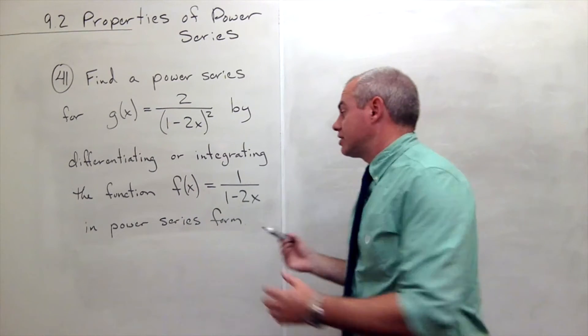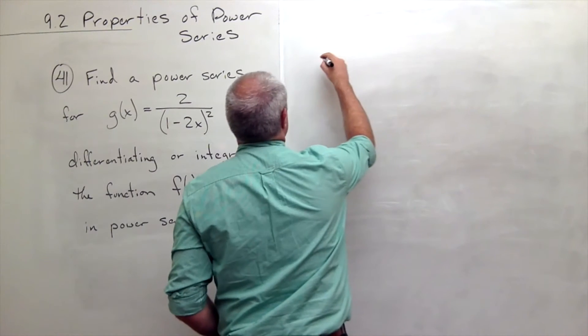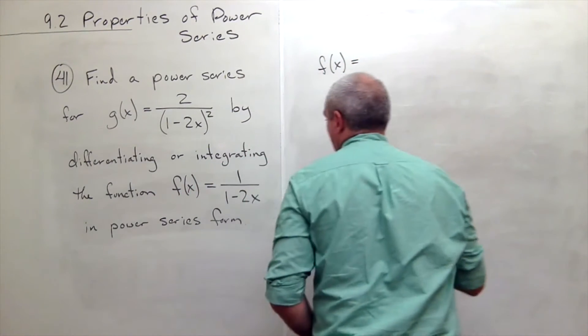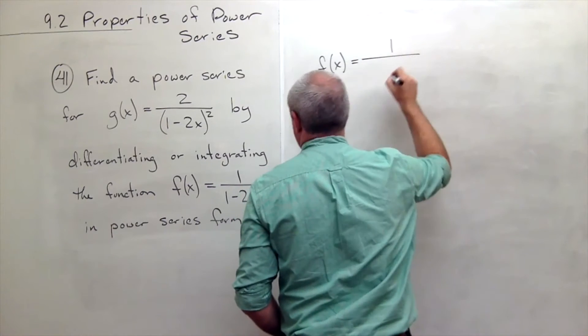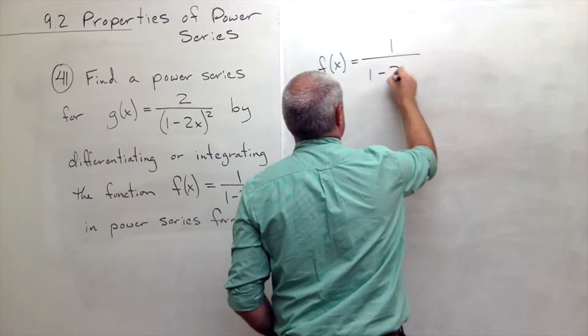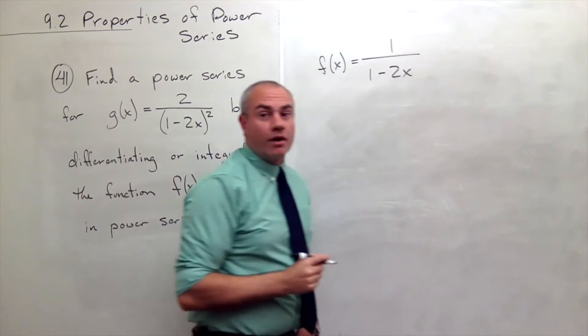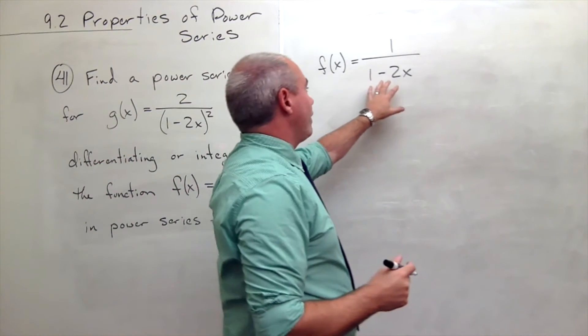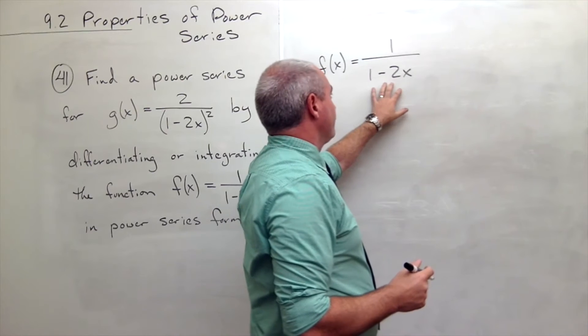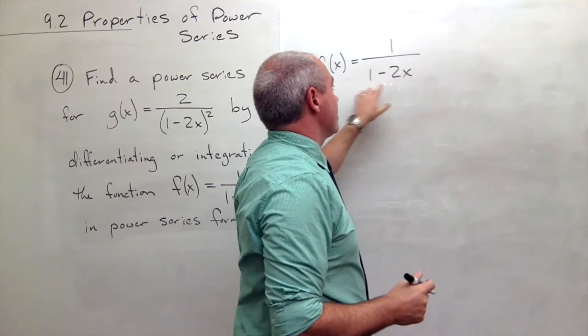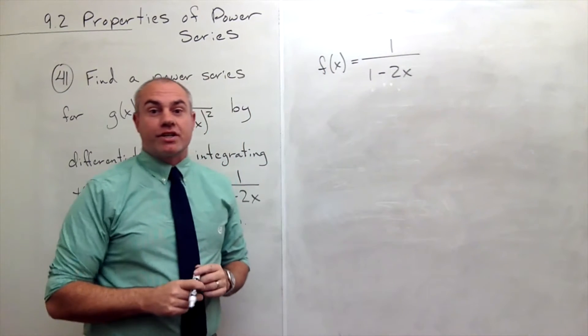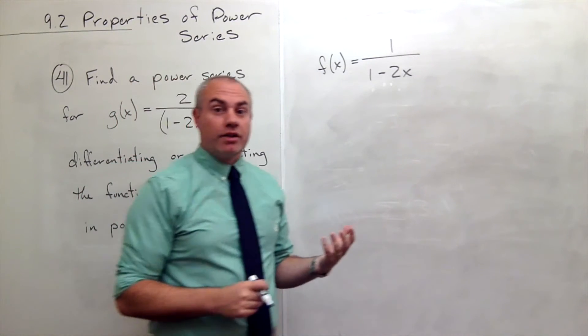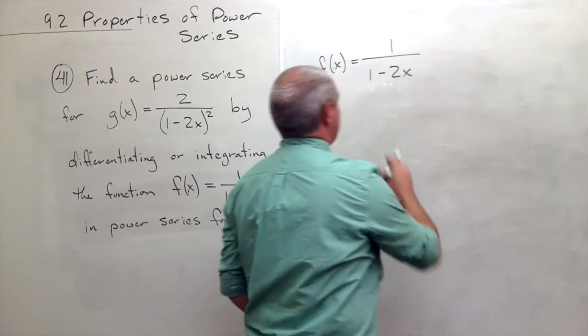First of all let's write down f(x). F(x) is equal to 1 over 1 minus 2x. Now how do I write this as a power series though? I see that this has the form of a geometric series. So I could use geometric series knowledge to write this as a power series.